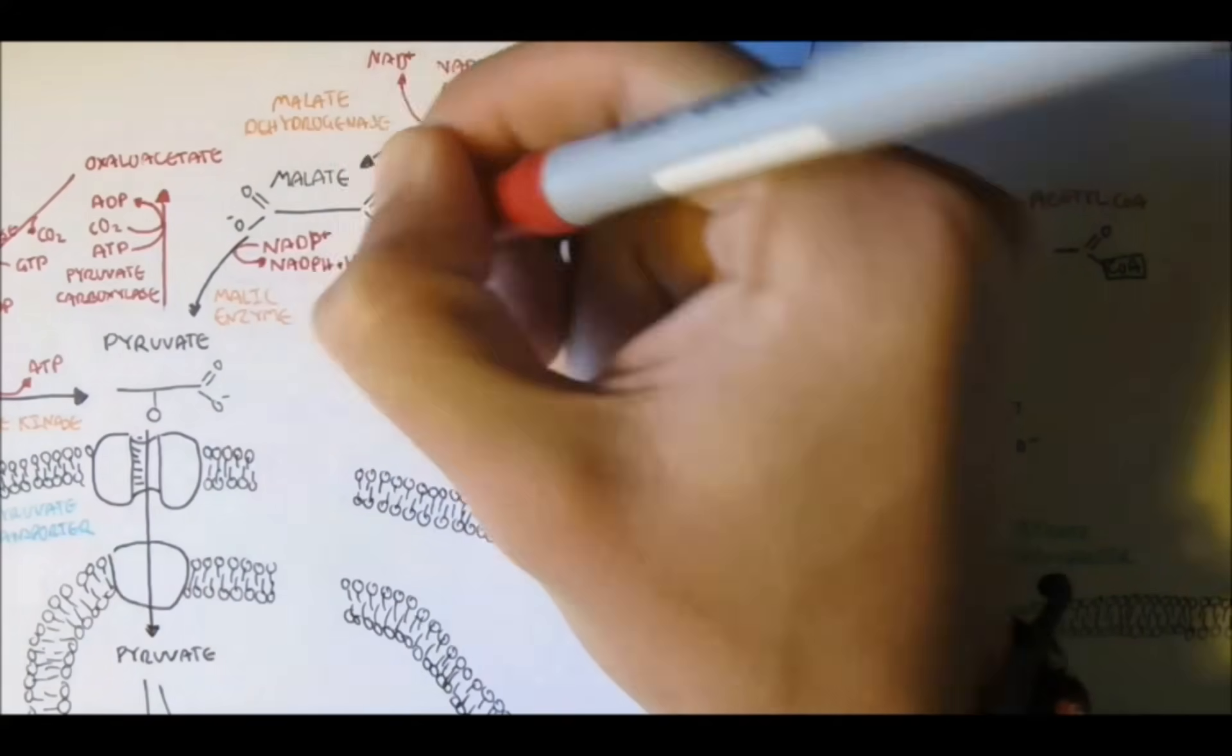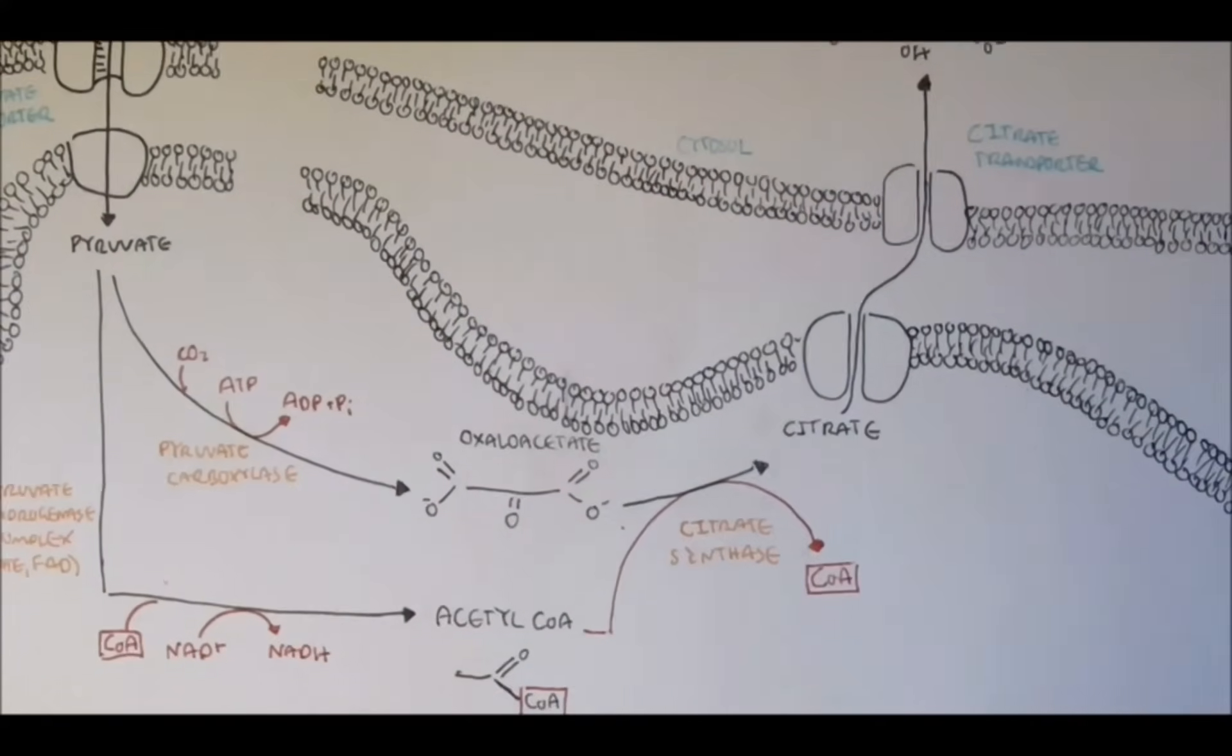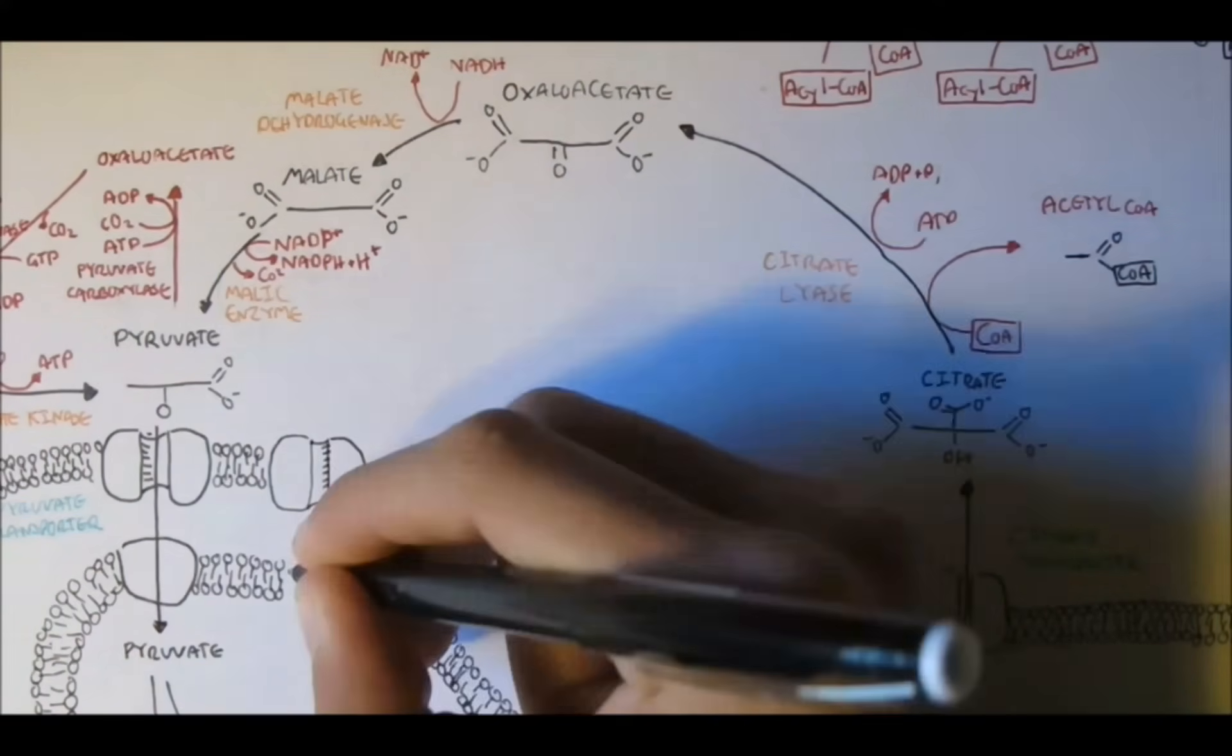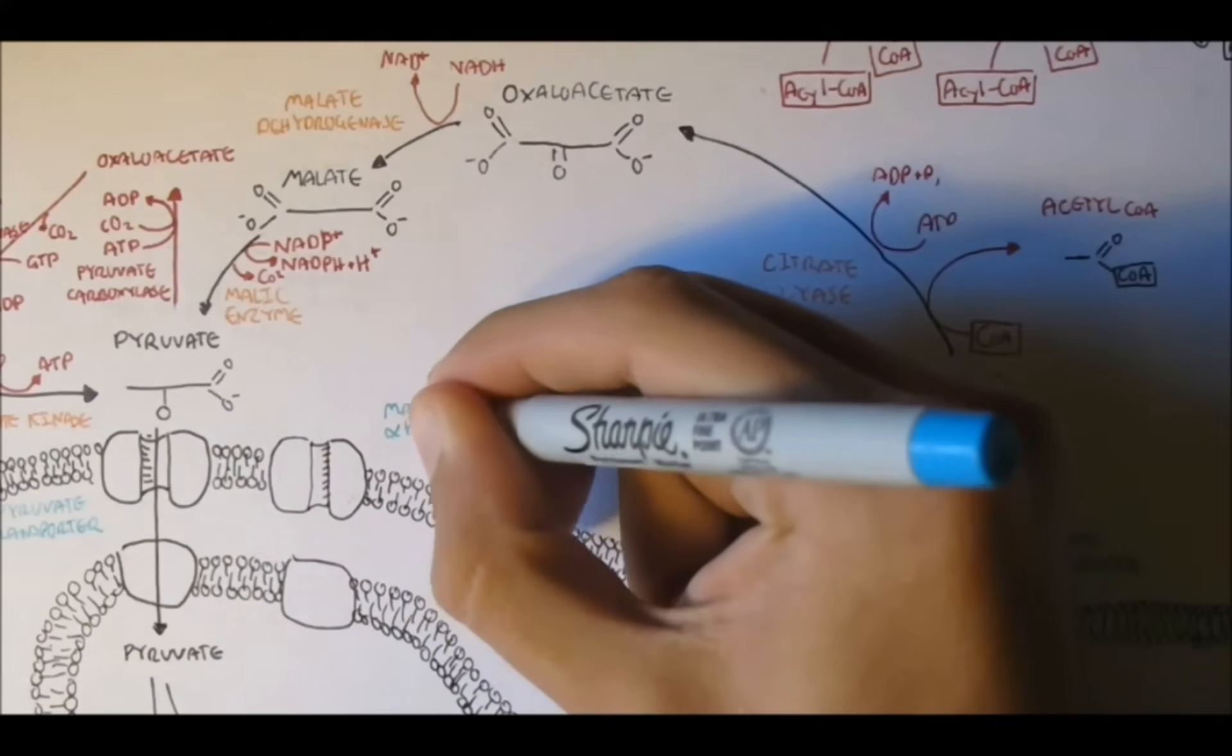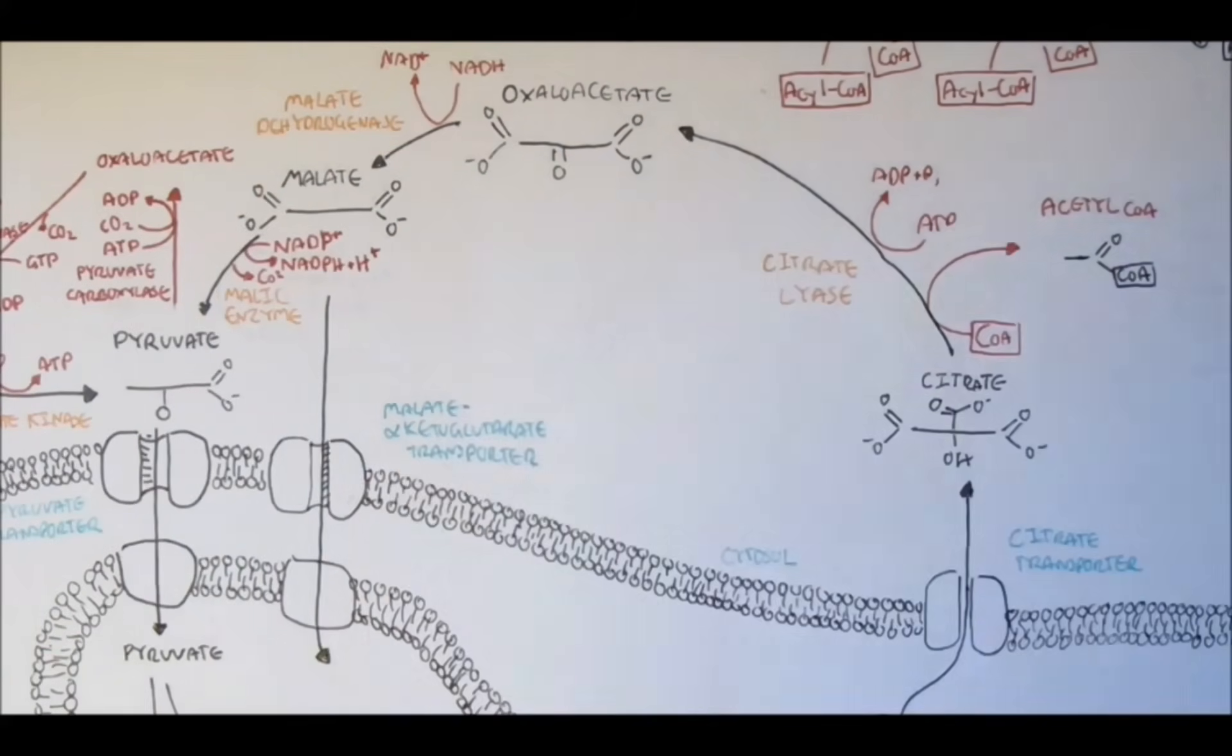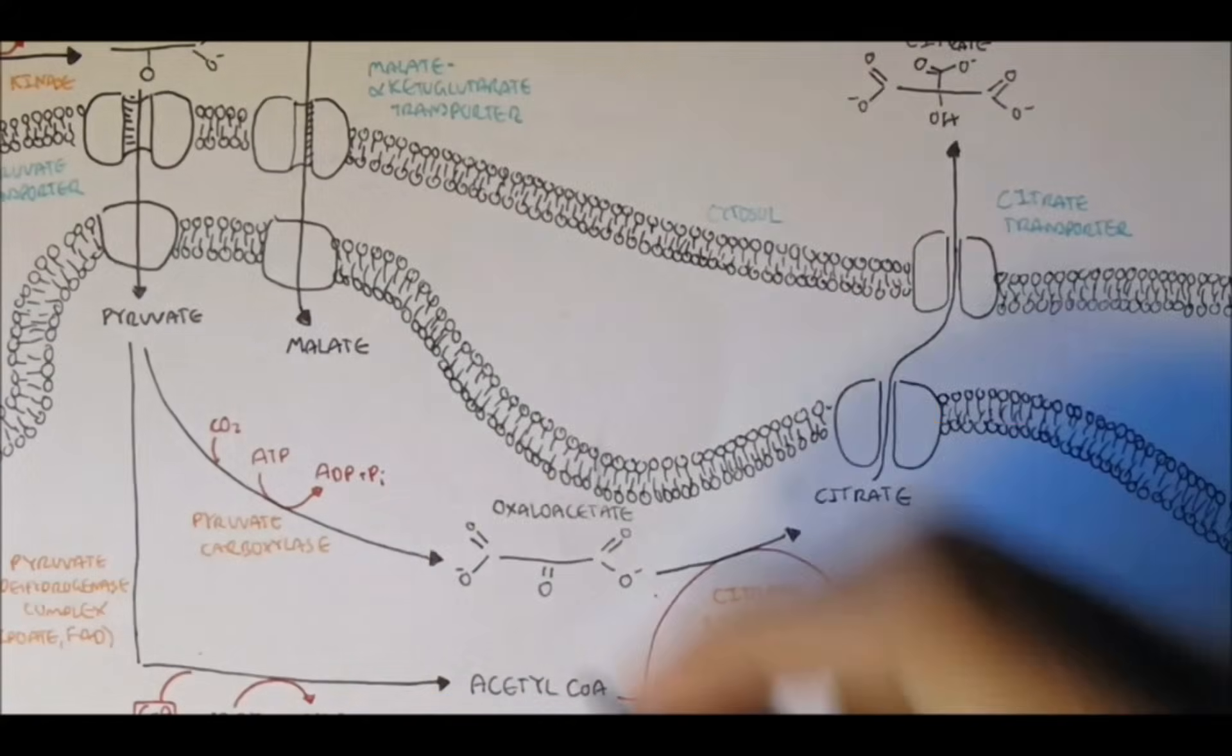Now, however, malate itself can enter the mitochondria. So, malate, alternatively, instead of converting to pyruvate, it can enter the mitochondria through the malate and alpha-ketoglutarate transporter. So, this transporter means it's for both malate and alpha-ketoglutarate, which we won't discuss. The alpha-ketoglutarate is part of the Krebs cycle also.